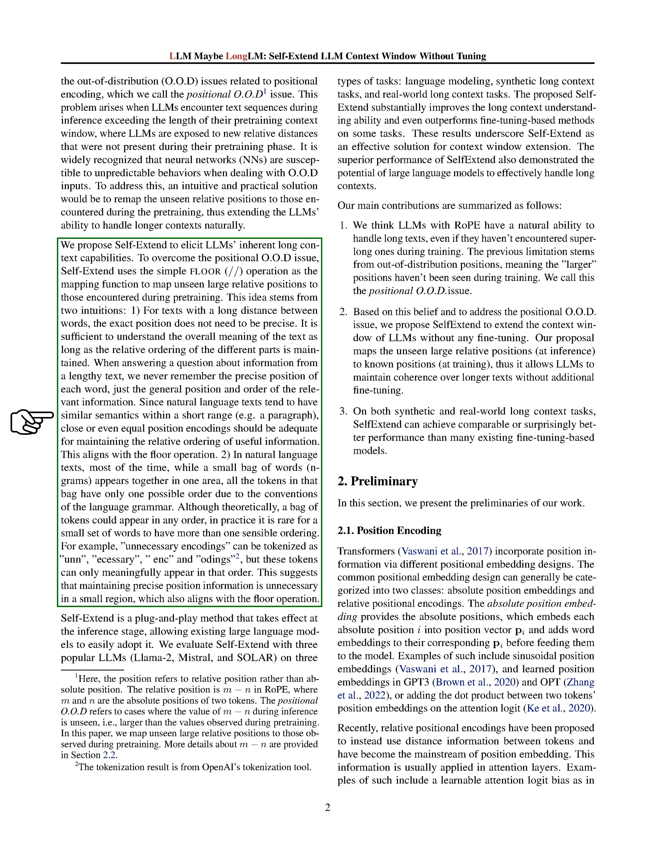Self-Extend uses a simple floor division operation to map unseen large relative positions to those encountered during pre-training. This approach is based on two insights. First, for texts with a long distance between words, the exact position doesn't need to be precise — it's enough to understand the overall meaning as long as the relative ordering of different parts is maintained. Second, in natural language texts, a small group of words (n-grams) usually appears together in one area, and all tokens in that group have only one possible order due to language grammar conventions.